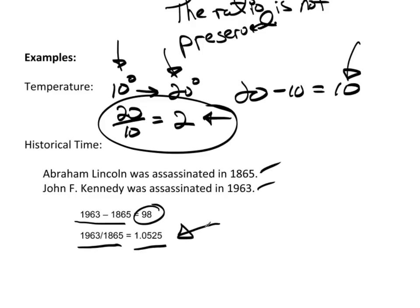What does that mean? Does it mean it took 1.0525 times as long to assassinate Kennedy as it did Lincoln? No, it doesn't make any sense. See, part of this problem is this does not have a natural zero.